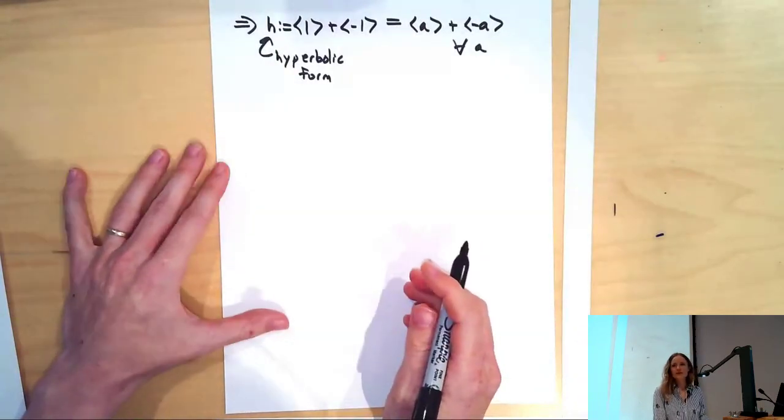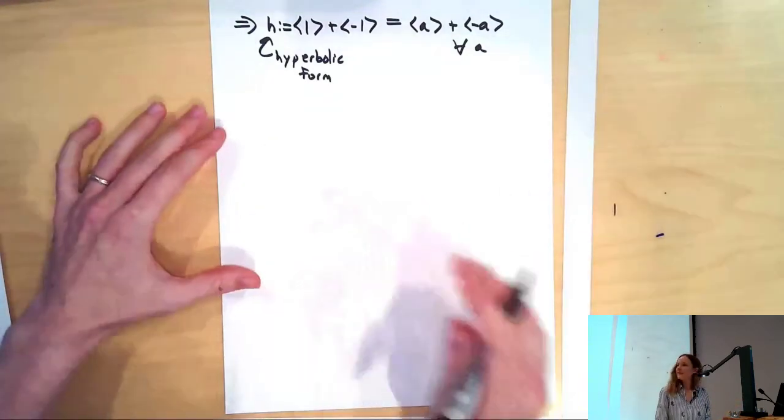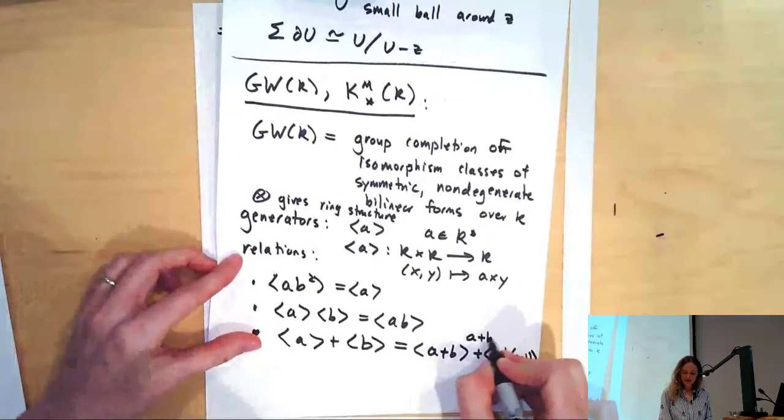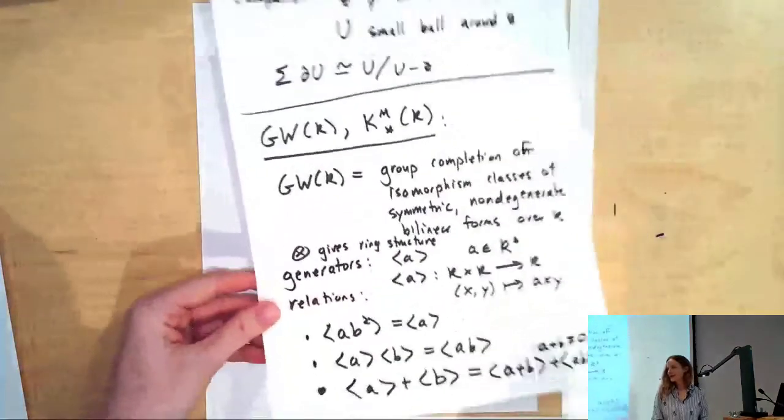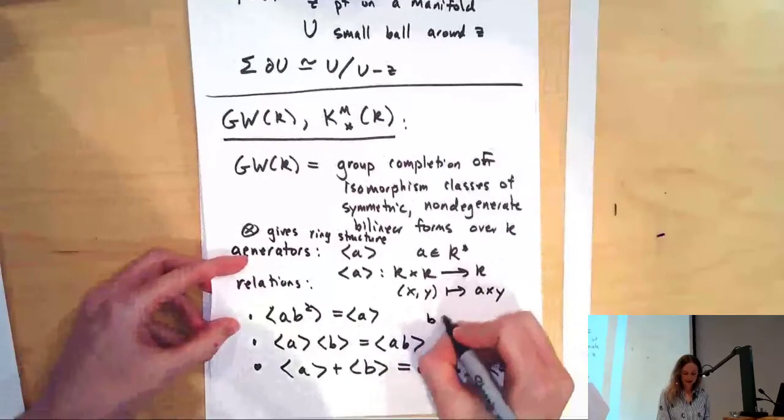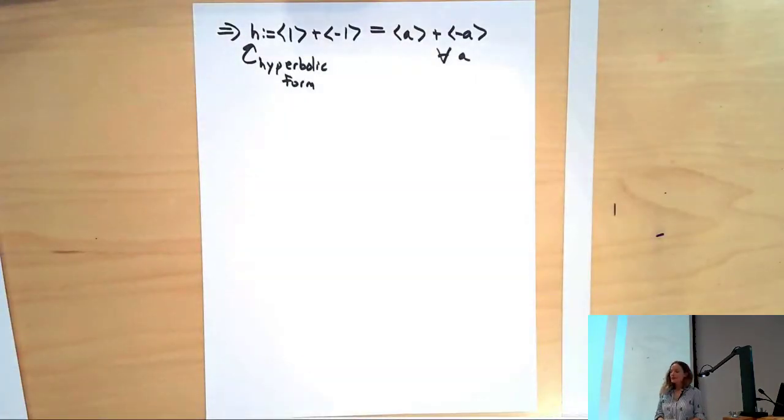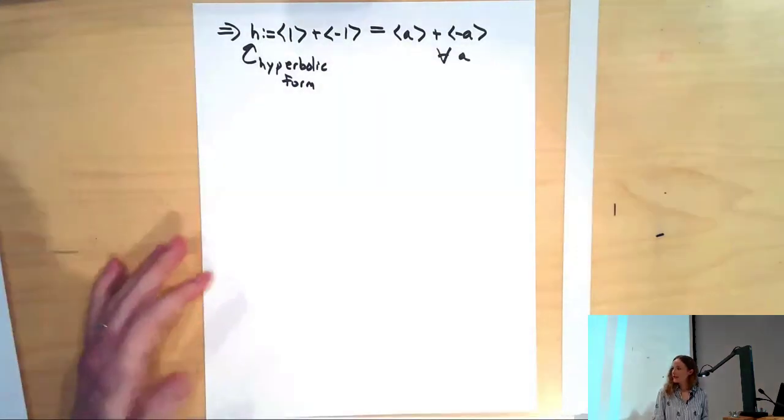Let's state the Milner conjecture. It's a huge achievement of A¹-homotopy theory. Let's look at some invariants on bilinear forms, try to justify the fact that for many fields, there are algorithms to decide if various sums of generators are equal to other ones. In the Grothendieck-Witt group, you have available a lot of tools to actually compute with this.